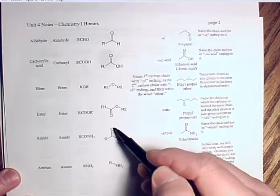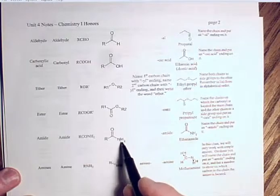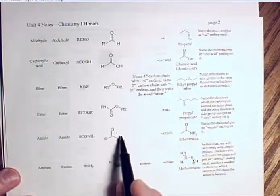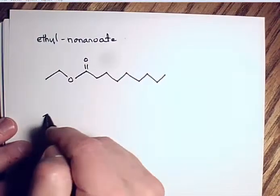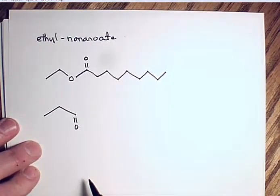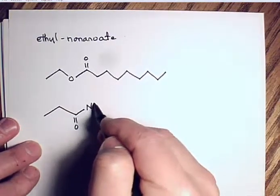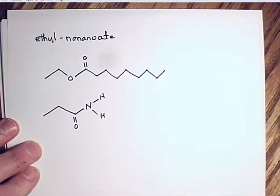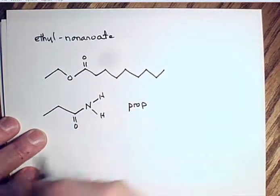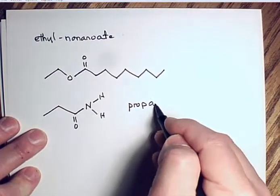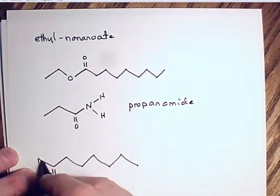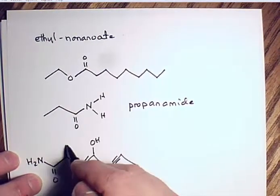An amide is a carbonyl group at the end of a chain attached to an amine group (NH2). An amine group alone is just NH2, but when placed next to a carbonyl, it becomes an amide. For three carbons — 'prop' — with only single bonds and an amide group, the name is 'propanamide.' An amine group on a chain is named with the '-amine' suffix; one carbon with only single bonds gives 'methanamine.'